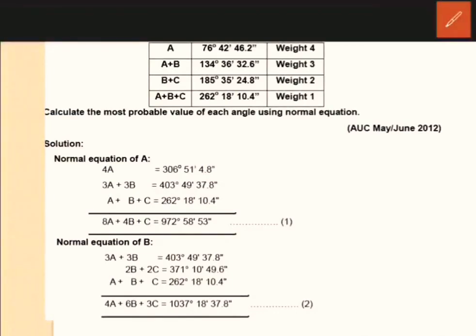The angle i is equal to 76 degrees 42 minutes. Therefore, A plus B is equal to one equation. B plus C is equal to another equation. We need to answer three equations. What is the most probable value? We have to answer the question using the normal equation method.